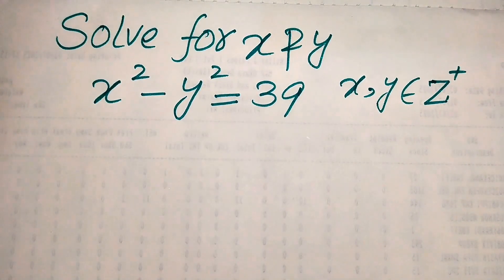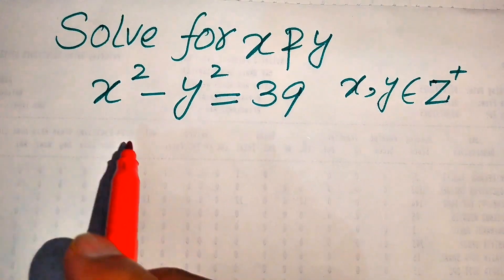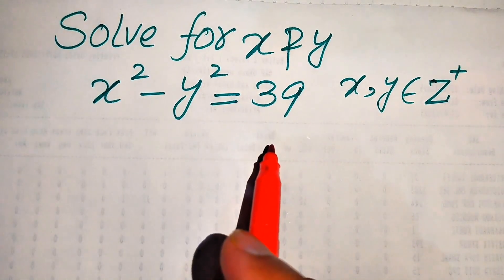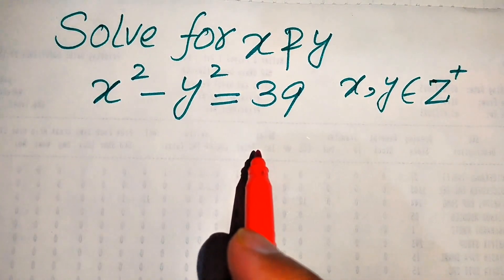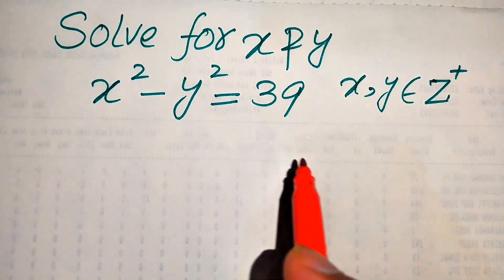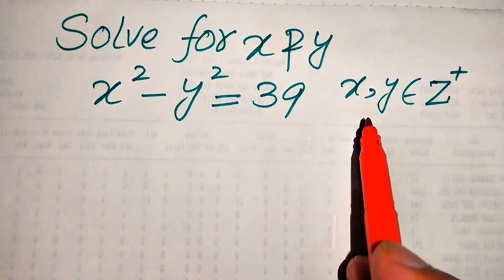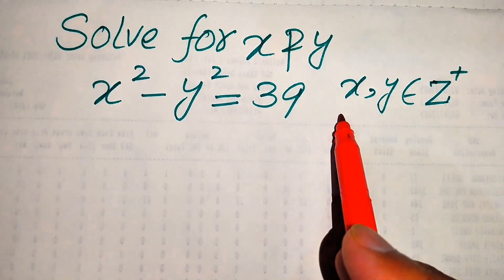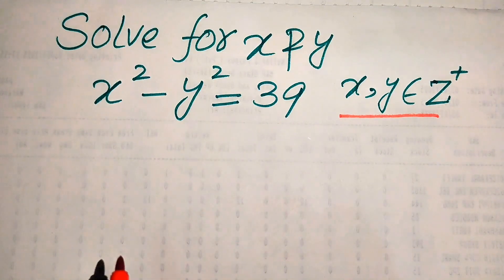Hello everyone, welcome to solve this math or algebra problem. Here we have x squared minus y squared equals 39, and we solve this problem for the values of x and y. Remember, x and y must be positive integers.